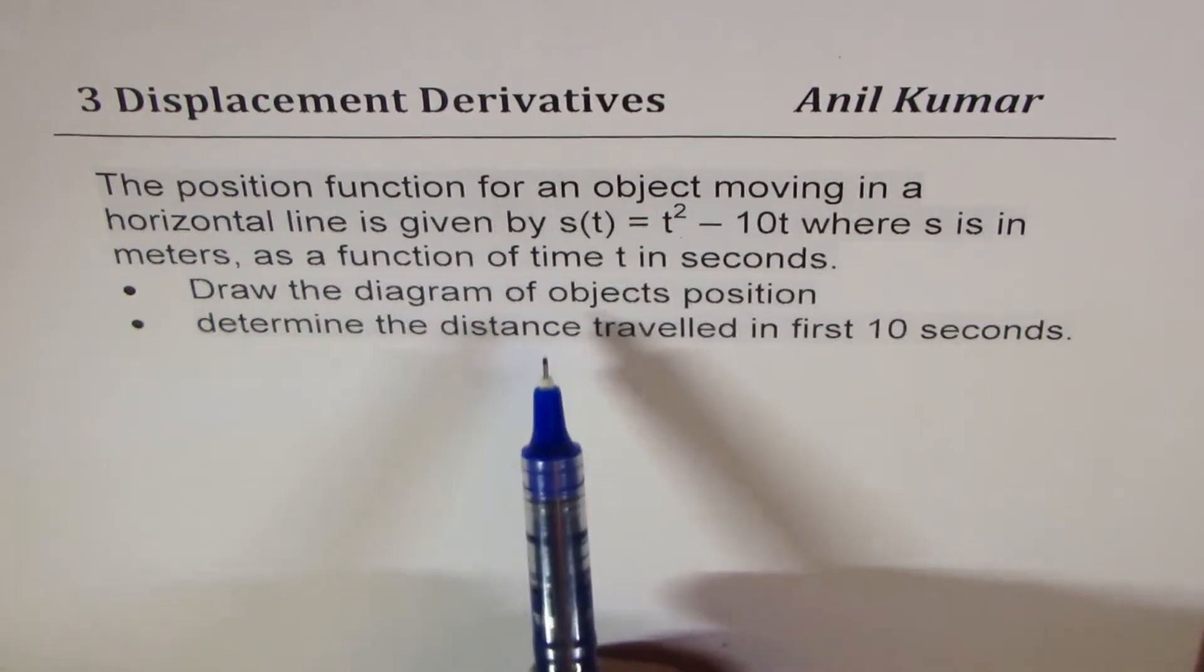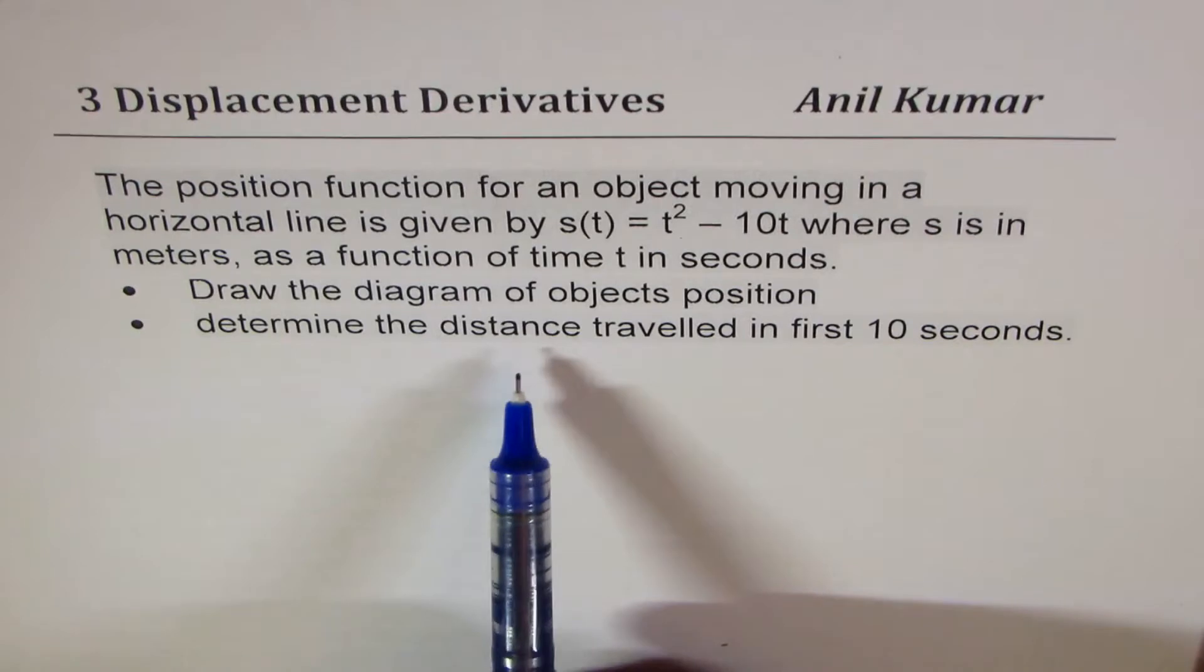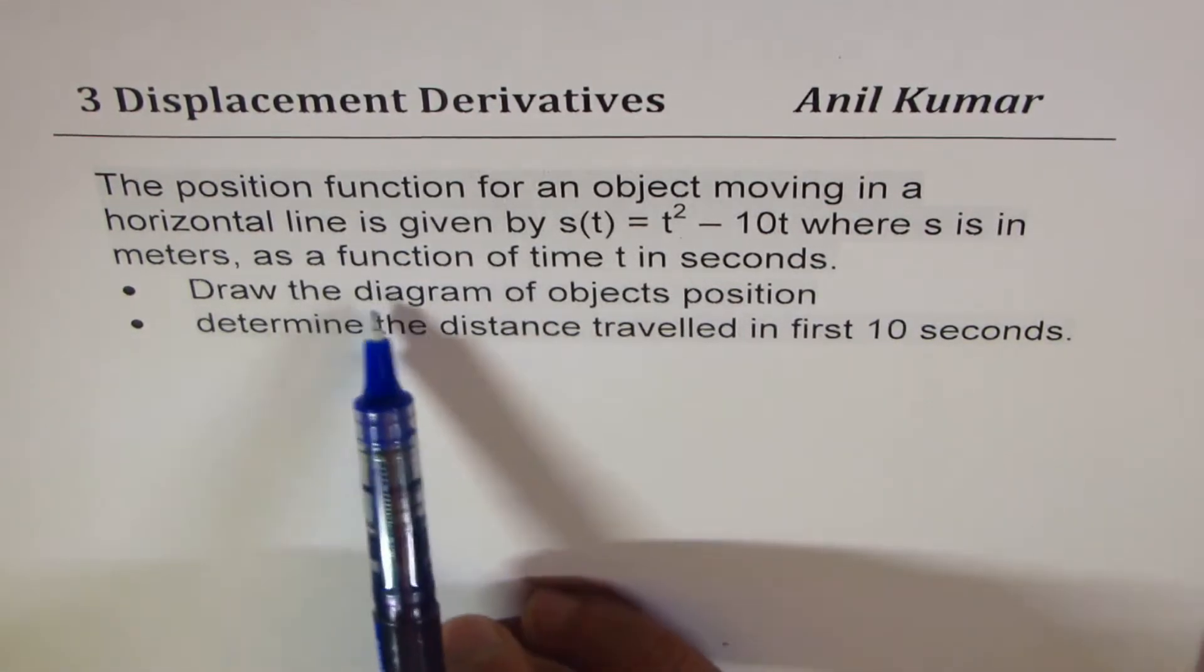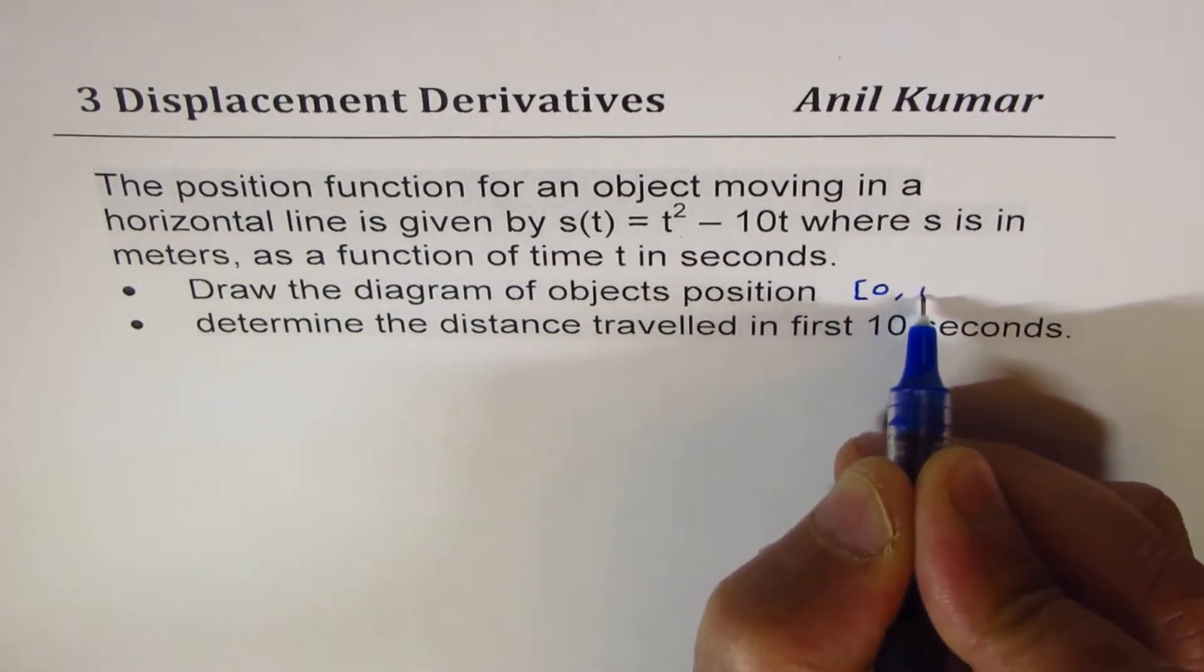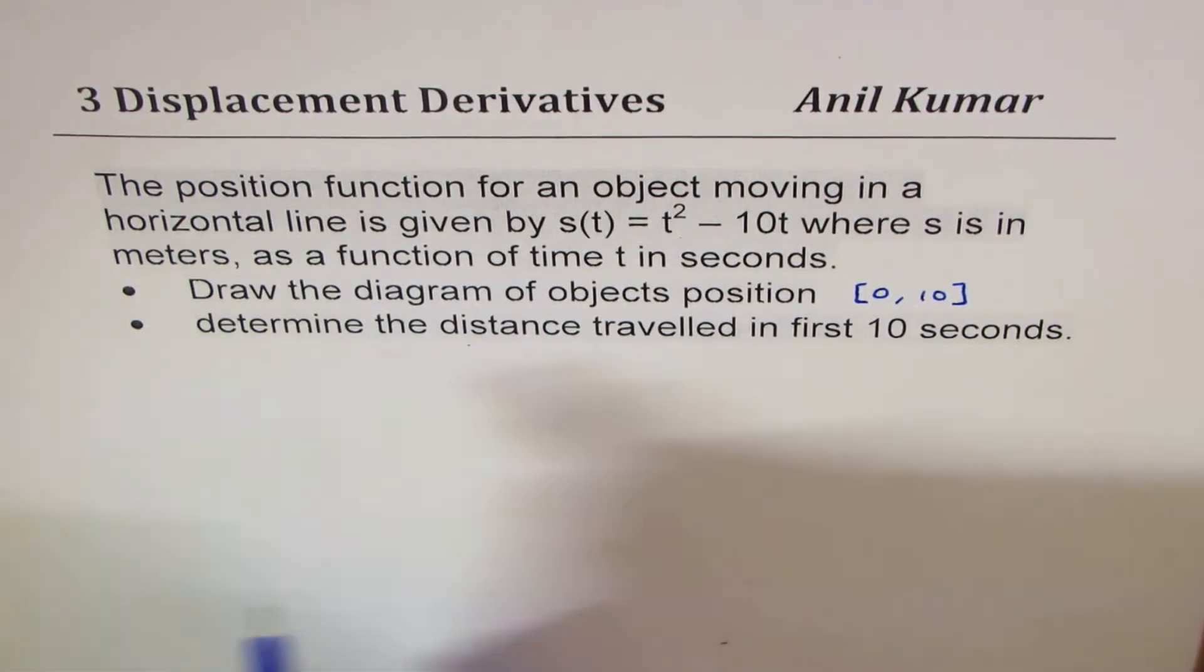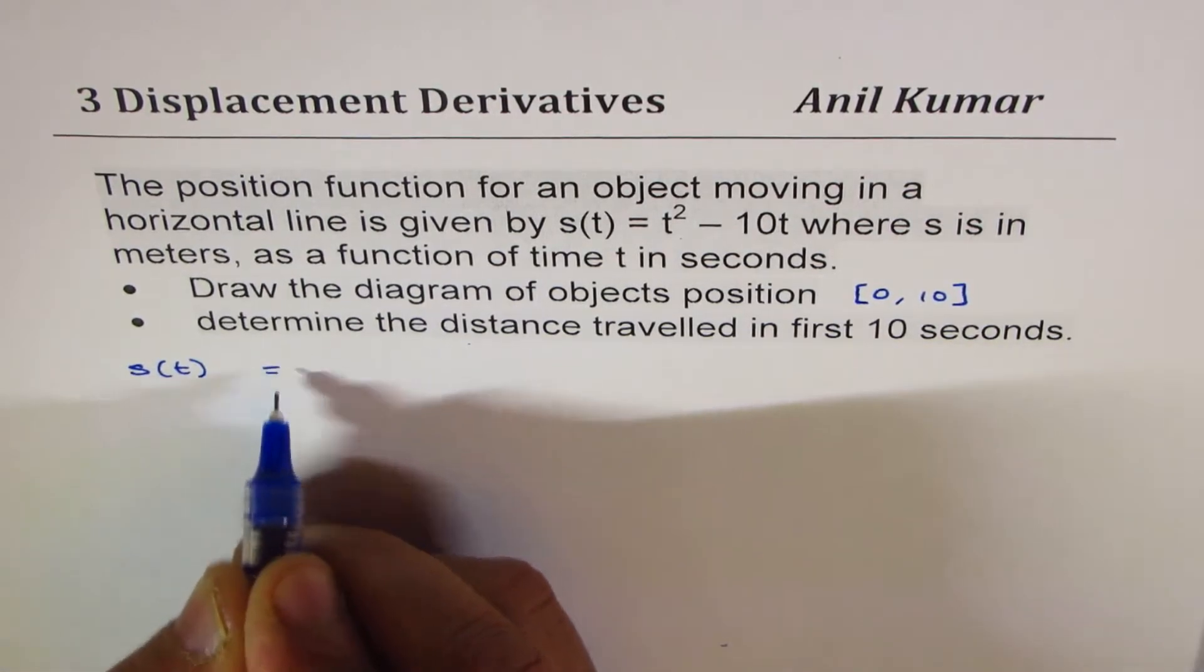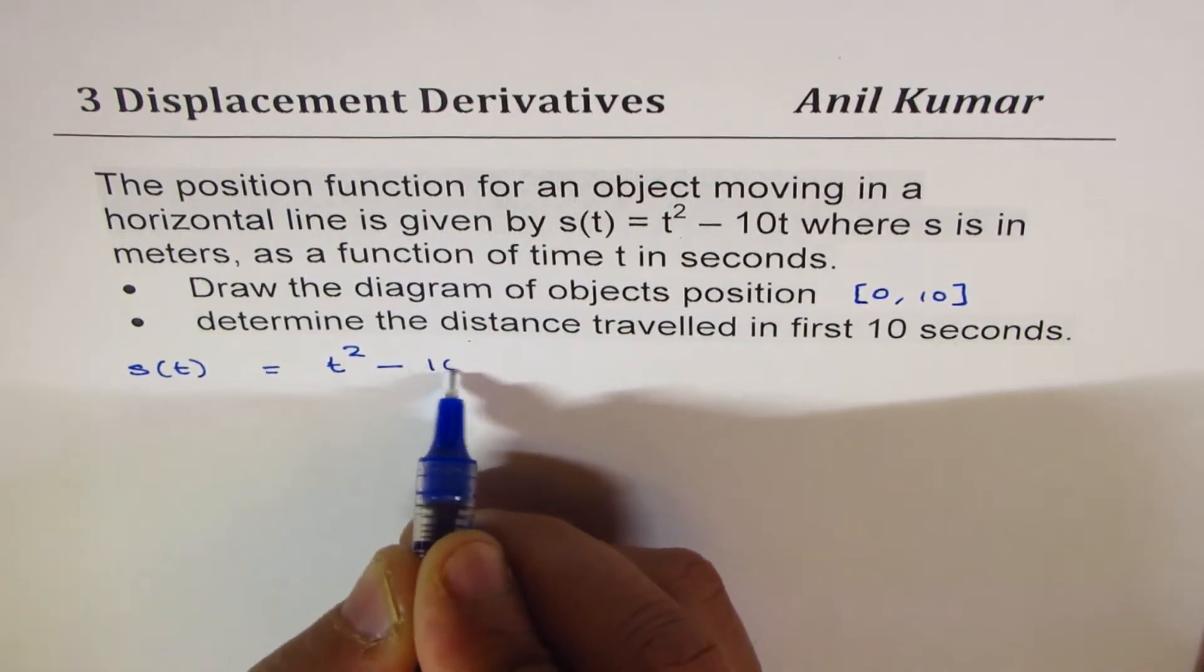We need to draw the diagram of the object's position and determine the distance traveled in first 10 seconds. So we'll draw the diagram in the interval 0 to 10 and then also calculate the total distance traveled in first 10 seconds. What we are given is the displacement function s(t) equals t squared minus 10t.